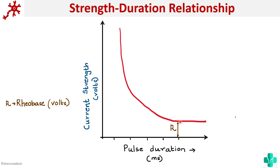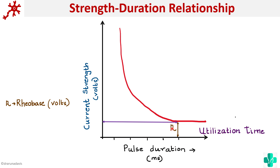Now there is another term called chronaxi. Chronaxi is the time required for a stimulus to excite a tissue. Chronaxi gives us a better idea about the excitability of the tissue. This minimum duration of current that must be applied is called the utilization time — the minimum duration for which a stimulus of strength equal to reobase must be applied to produce an action potential.